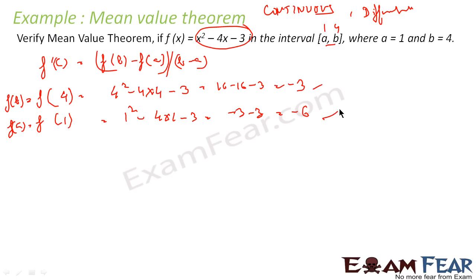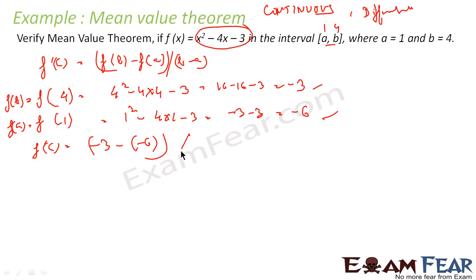Now the theorem says there exists a c such that f'(c) = (f(b) - f(a)) / (b - a). f(b) = -3, f(a) = -6, divided by b - a = 4 - 1. This is (-3 + 6) / 3 = 3/3 = 1. So I know that there exists a c such that f'(c) = 1.